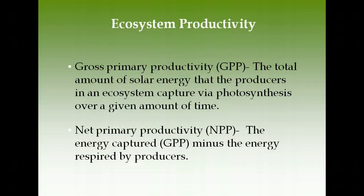Productivity tells us how much energy is available in an ecosystem, which determines how much life it can support. Gross primary productivity (GPP) is the total amount of solar energy that producers capture via photosynthesis. Net primary productivity (NPP) is the energy captured by plants minus what they use for respiration. The equation is: NPP = GPP − Respiration.